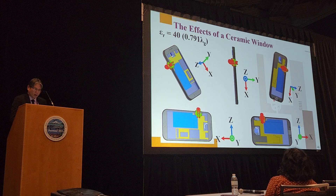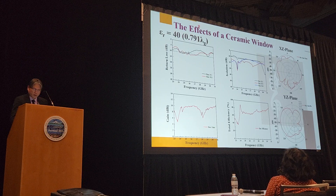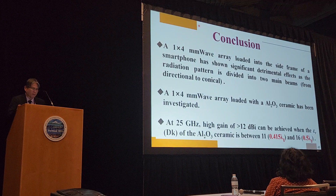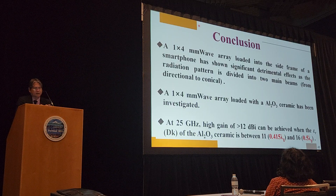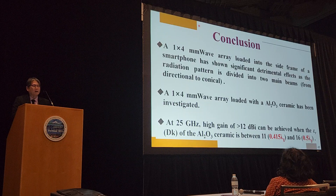So here's the conclusion: we have investigated a 1x4 millimeter wave antenna array and found that indeed, putting a plastic cover on top does have a detrimental effect. We found that by using an AL2O3 ceramic with epsilon r of 12, you get a really nice high gain effect again, and the performance returns to the same as free space.